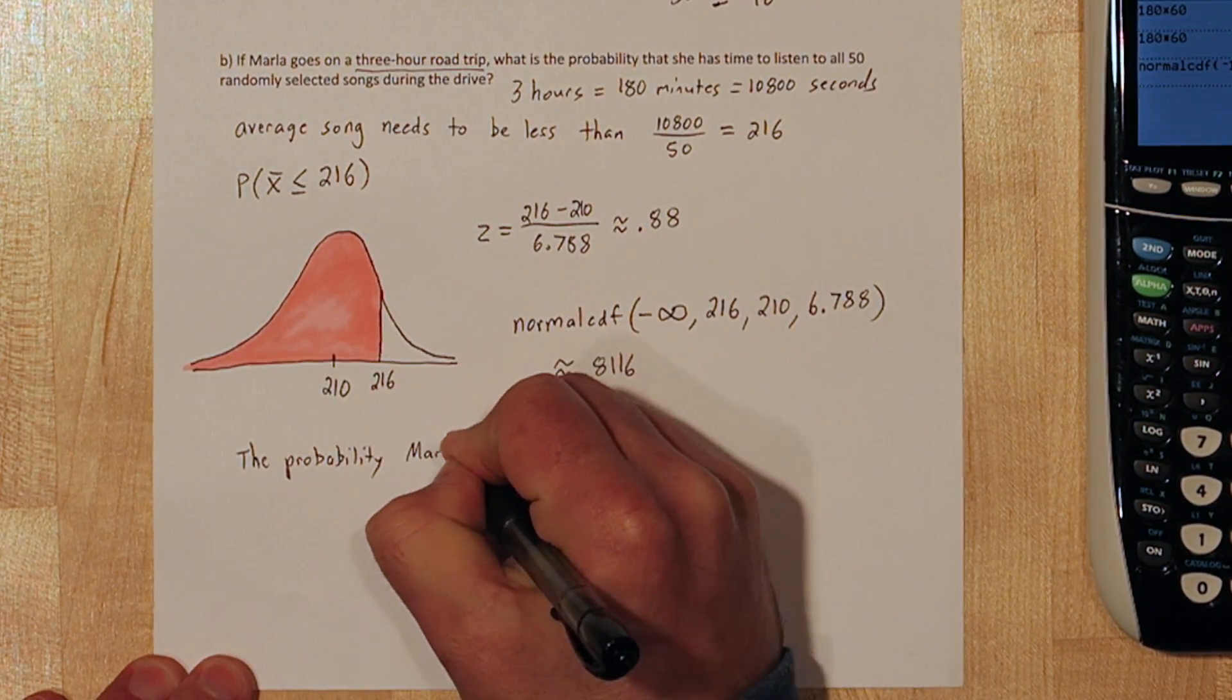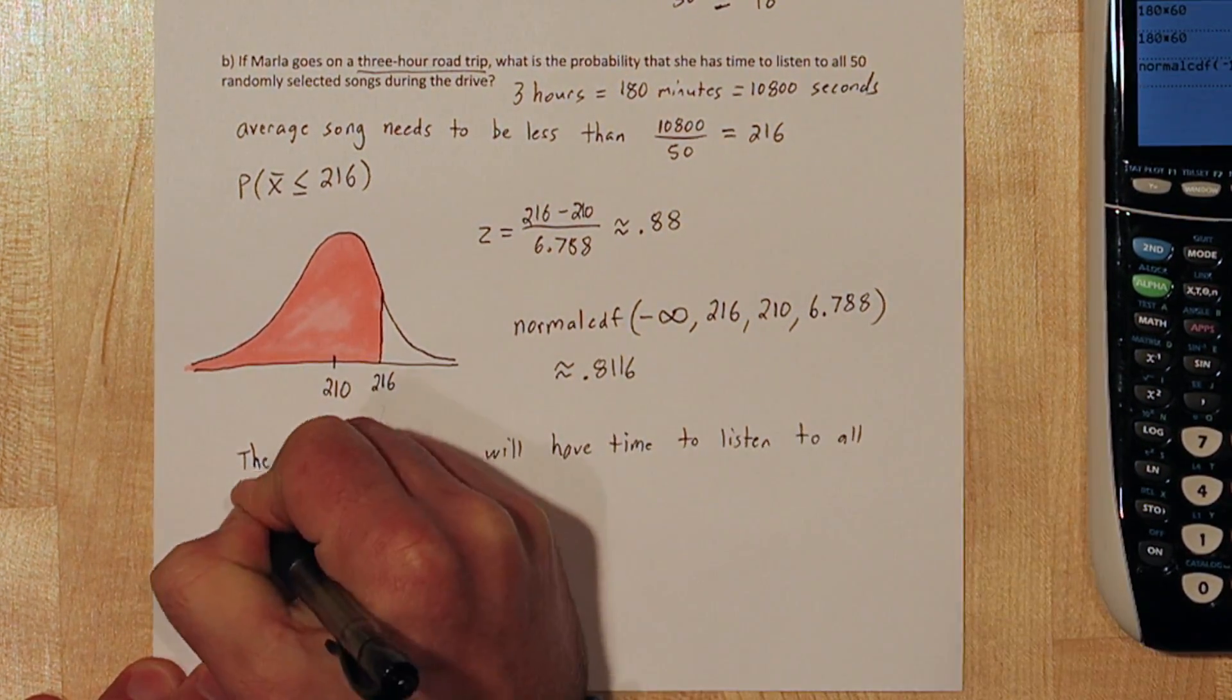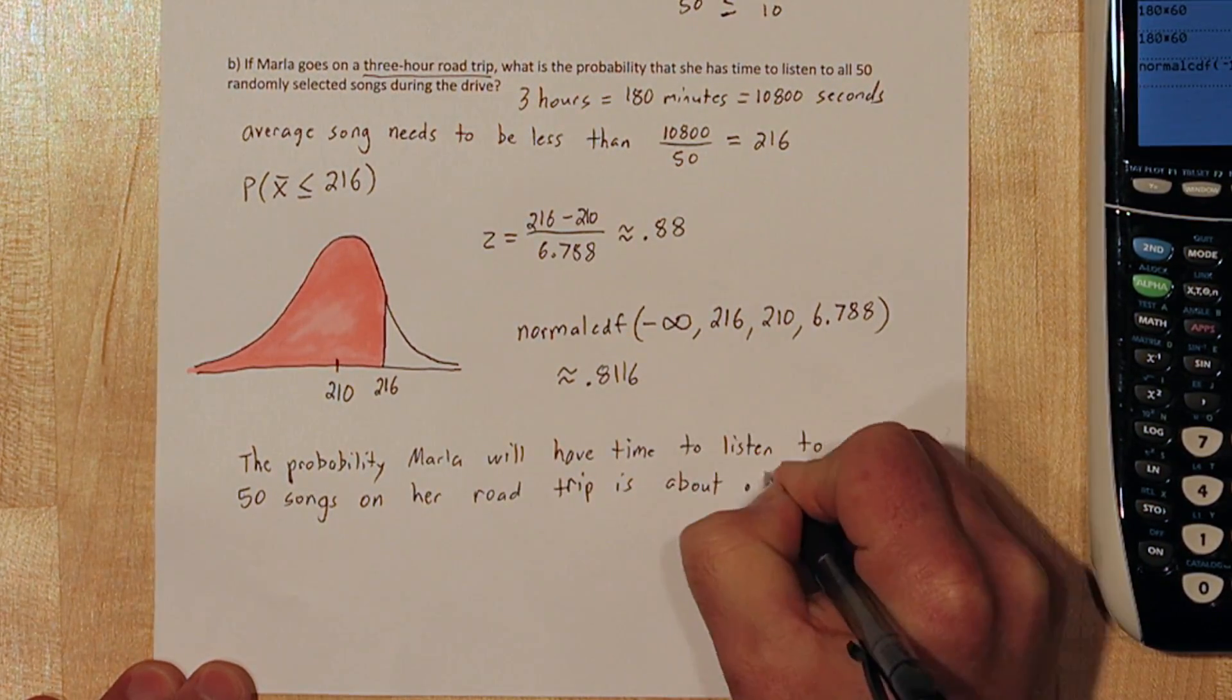So the probability that Marla will have time to listen to all 50 songs on her road trip is about 0.8116.